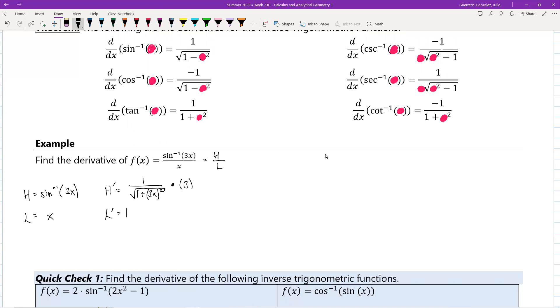So therefore, f prime of x is going to be, if you guys remember the derivative for a quotient rule, it's low times d high minus high times d low, all over low squared. So I get to just fill in the rest here.